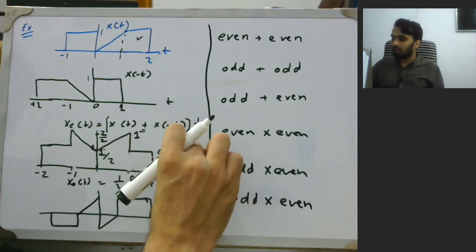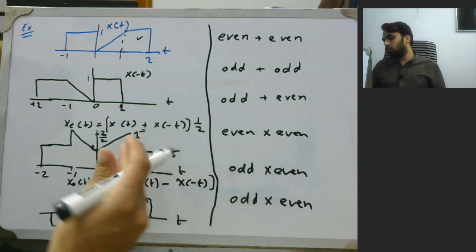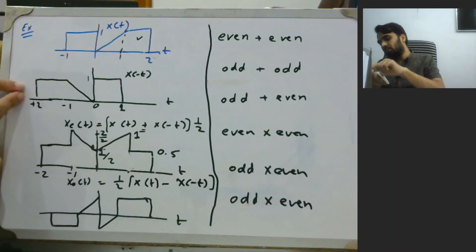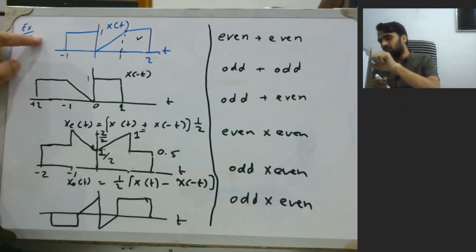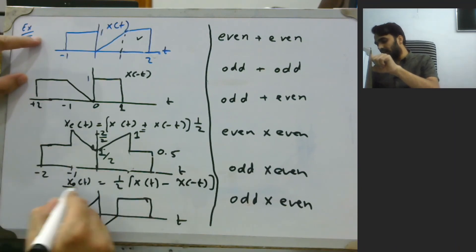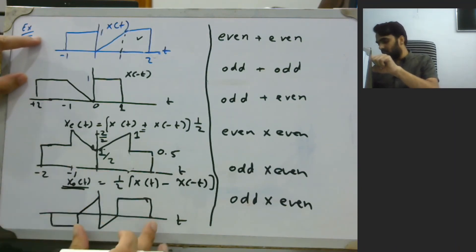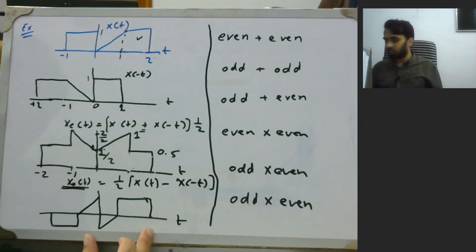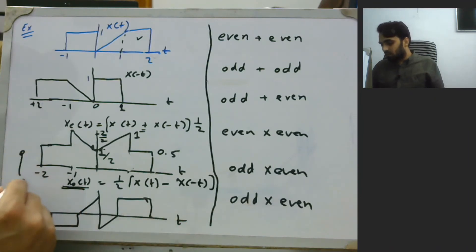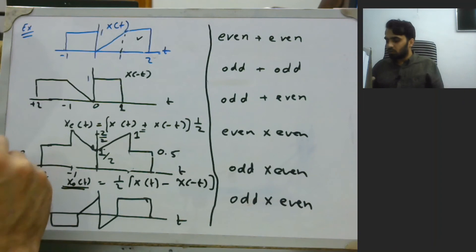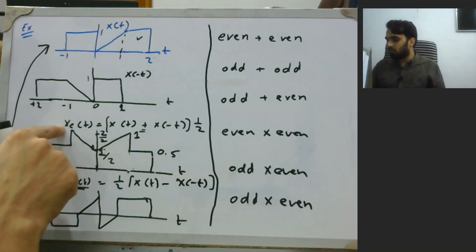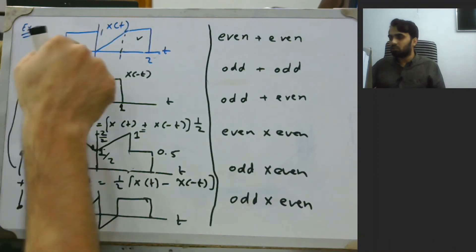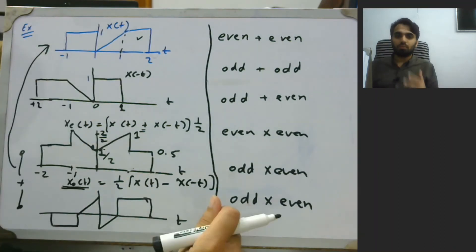Similarly, we subtract x(-t) from x(t) to get the odd part, which is plotted here. As an interesting exercise, if you add the even part with the odd part, you should be able to get back your original signal x(t).